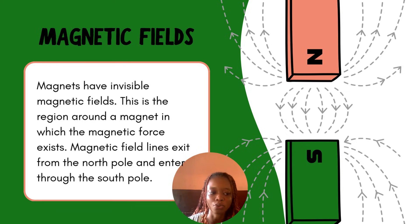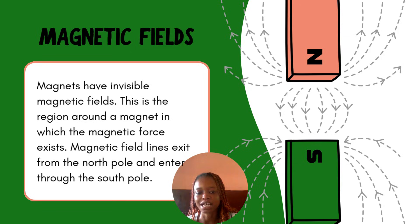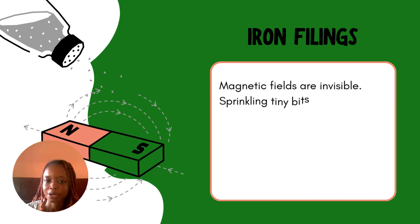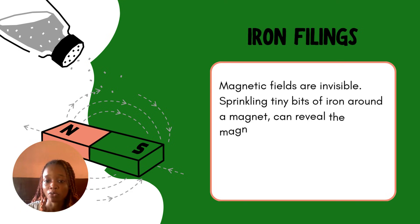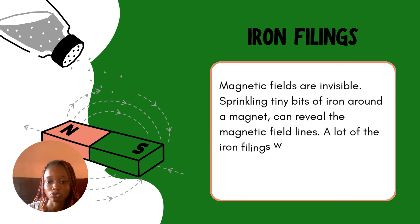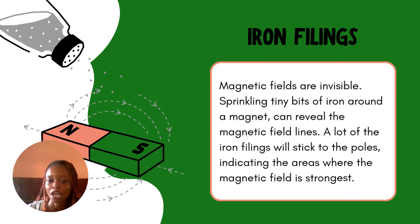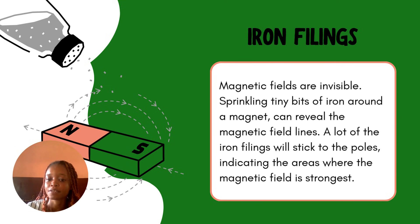Magnetic field lines exist from the north pole and enter through the south pole, just as you can see displayed on the screen. Magnetic fields are visible — sprinkling tiny bits of iron around the magnet can reveal the magnetic field lines. When you have a magnet and you spill tiny bits of iron near it, you are able to see visible magnetic field lines. A lot of the iron filings will stick to the poles, indicating the areas where the magnetic field is strongest.